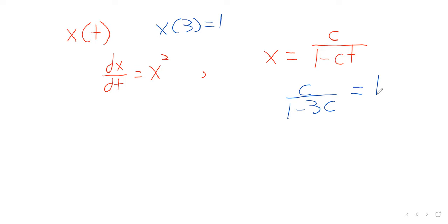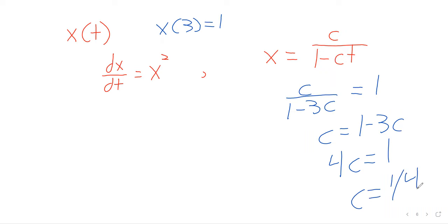By far the most common initial value is what is the function doing at 0 — that's where the word 'initial' comes from. But it doesn't have to be at 0; we can just have any piece of information about the function at any point.